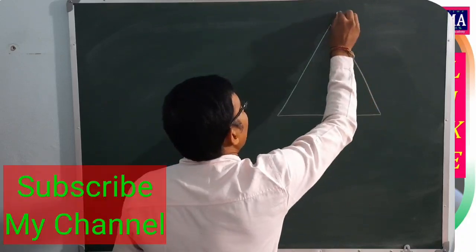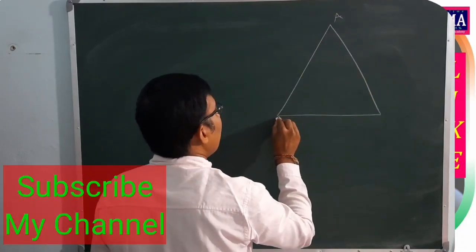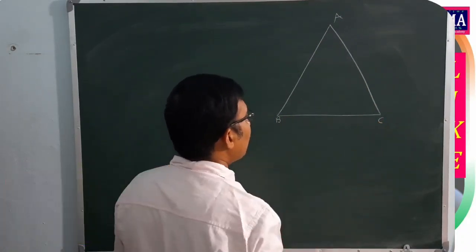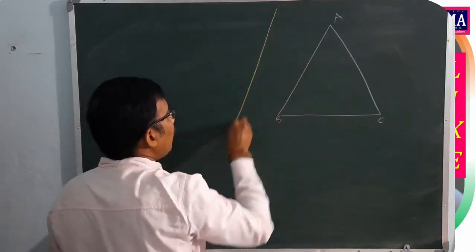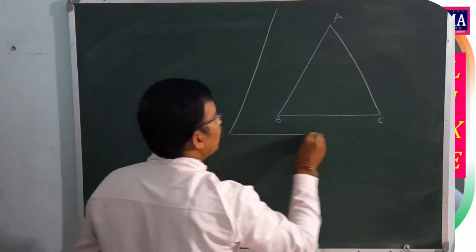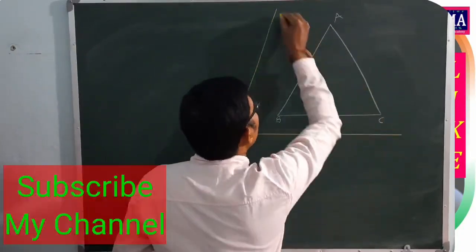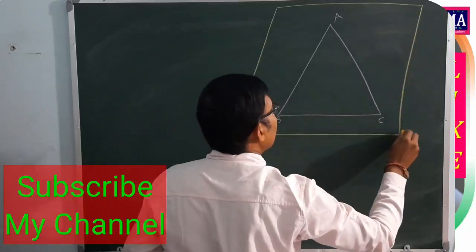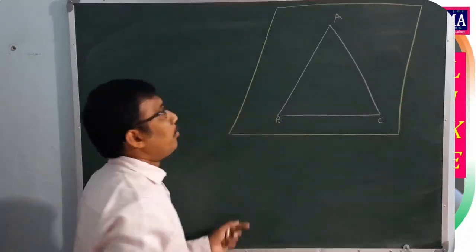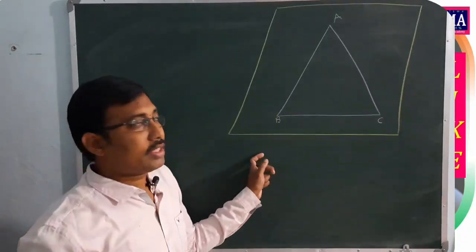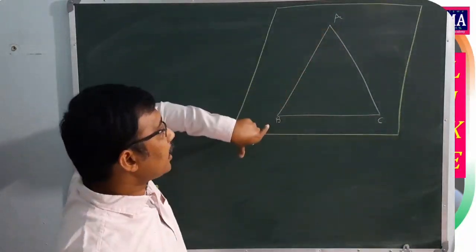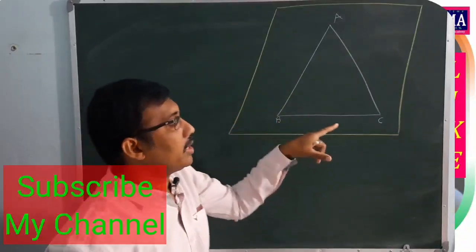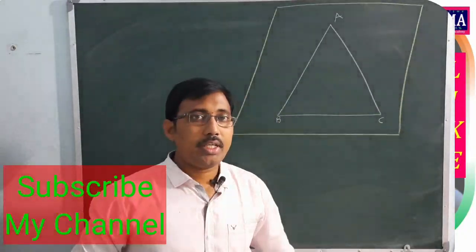Triangle ABC is a closed figure drawn on a plane surface. A triangle divides the plane in which it lies into three sets of points.